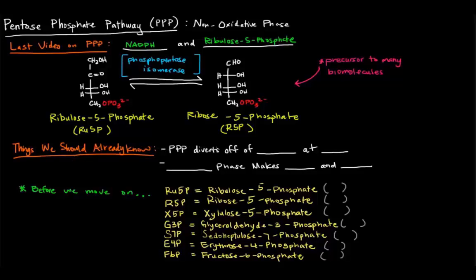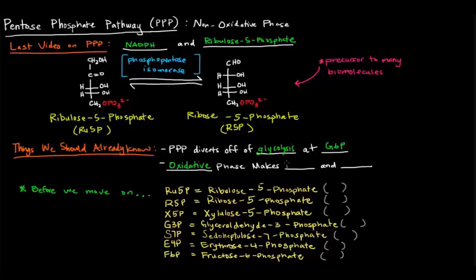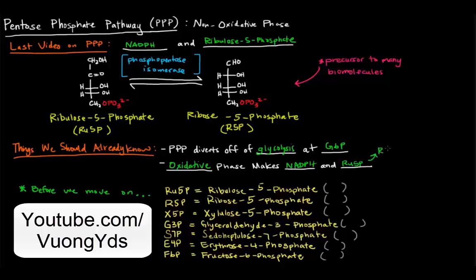Things we should already know from the previous video: the pentose phosphate pathway diverts off of glycolysis at G6P, glucose 6-phosphate. Once glucose 6-phosphate is created, it can either continue in glycolysis or go to the pentose phosphate pathway. Also, the oxidative phase of the pentose phosphate pathway makes NADPH and ribulose 5-phosphate, which can be turned into ribose 5-phosphate.